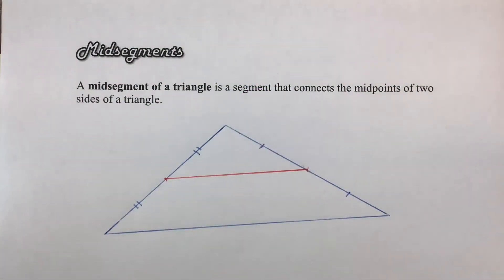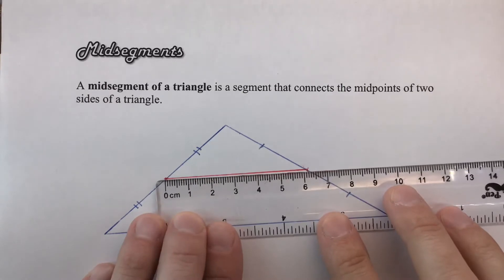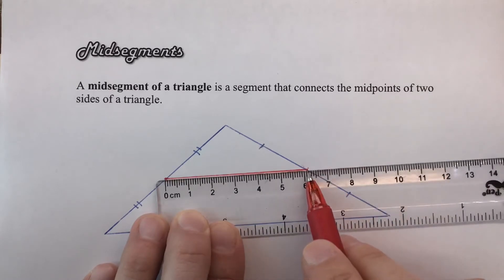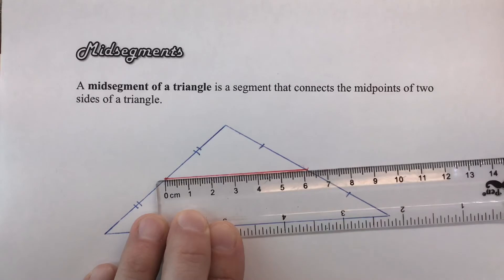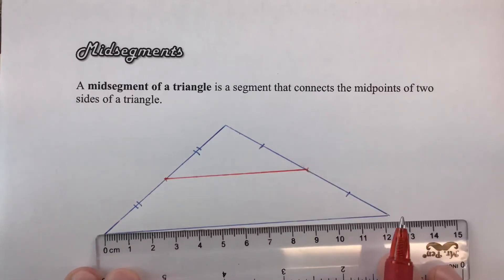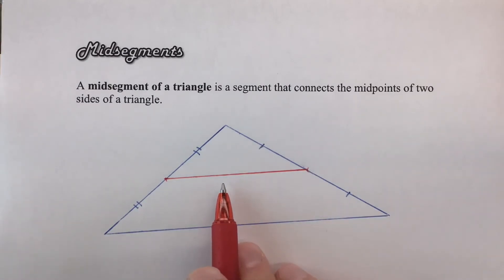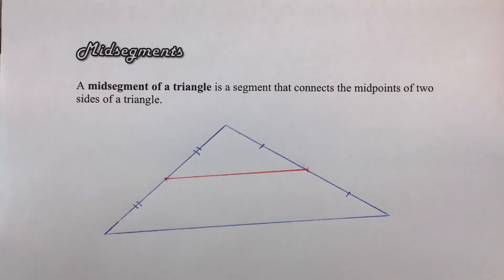The first property is going to be related to the length of the midsegment. Measuring it, we get about 6.1 centimeters. If you remember, the base was about 12.2 centimeters. That means the midsegment is actually half the length of that third side. We're looking at this inductively — drawing a picture and measuring — but it is true and we'll be able to use it.